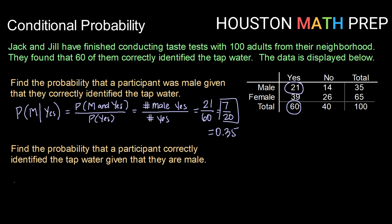We want to know what is the probability that a contestant correctly identified the tap water given that they were male. So this would be the probability of correctly identifying and being male divided by the probability of being male.